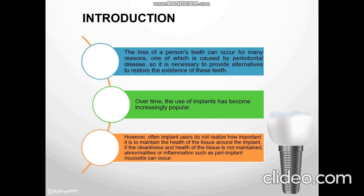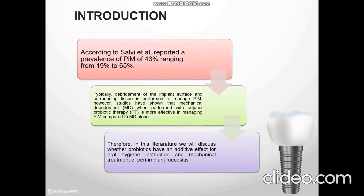Introduction. The loss of permanent teeth can occur for many reasons, one of which is caused by periodontal disease, so it is necessary to provide alternatives to restore the existence of these teeth. Over time, the use of implants has become increasingly popular. However, often implant users do not realize how important it is to maintain the health of the tissue surrounding the implant. If the cleanliness and health of the tissue is not maintained, abnormalities such as peri-implant mucositis can occur.